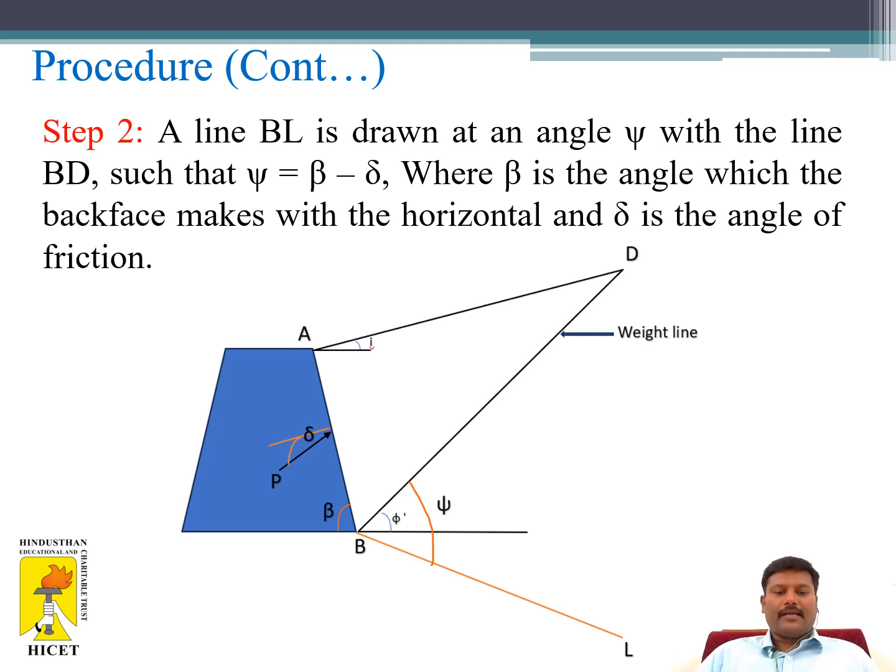Step 2: A line BL is drawn at an angle ψ to the line BD such that ψ equals β minus δ, where β is the angle which the back face makes with the horizontal and δ is the angle of friction.